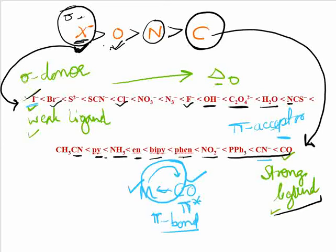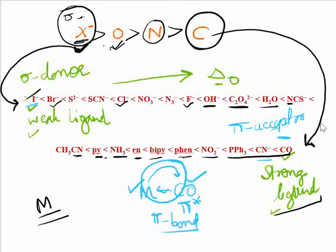So this basis is called the spectrochemical series. This series is for a particular metal, and it tells us how the delta O value changes when we change the ligands. This is all about the spectrochemical series.